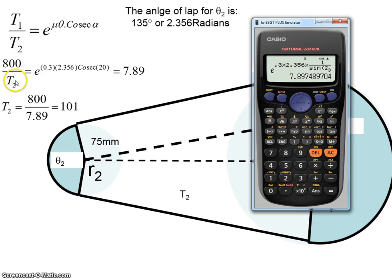So 800 over T2 is equal to 7.897. So if I want to get T2, I need to bring this down, which is the same as getting the answer to that x to the power of minus 1. Multiply that by 800. And that gives me 101.29.